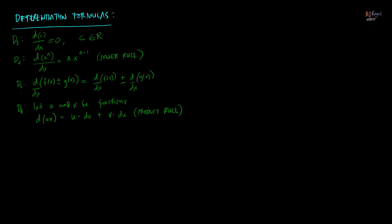If u and v are in terms of x, we take the derivative with respect to x; if they are in terms of other variables like y, z, or t, we differentiate with respect to those variables. Note that in the product rule, dv means the derivative of v and du means the derivative of u.